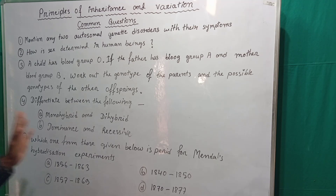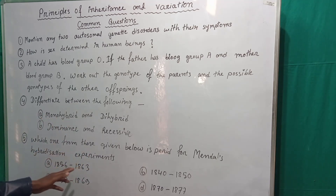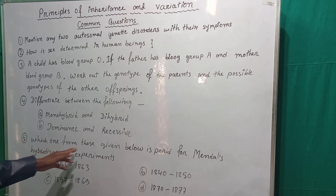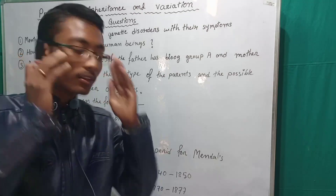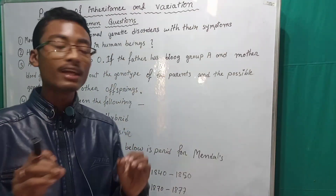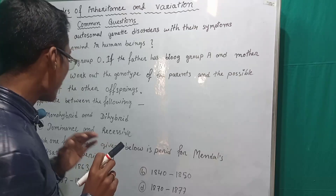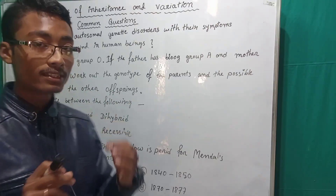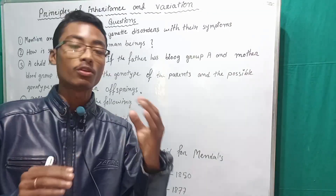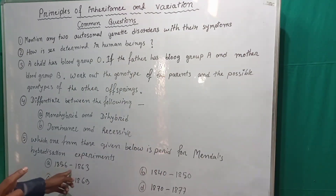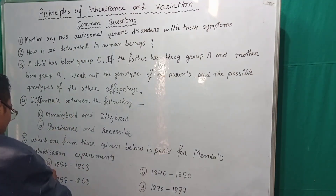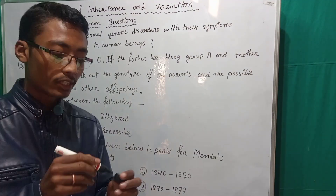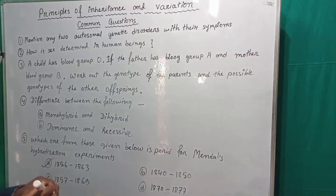The next most important question is: Which period was used for Mendel's hybridization experiments? The answer is from 1856 to 1863, which is a period of 7 years.